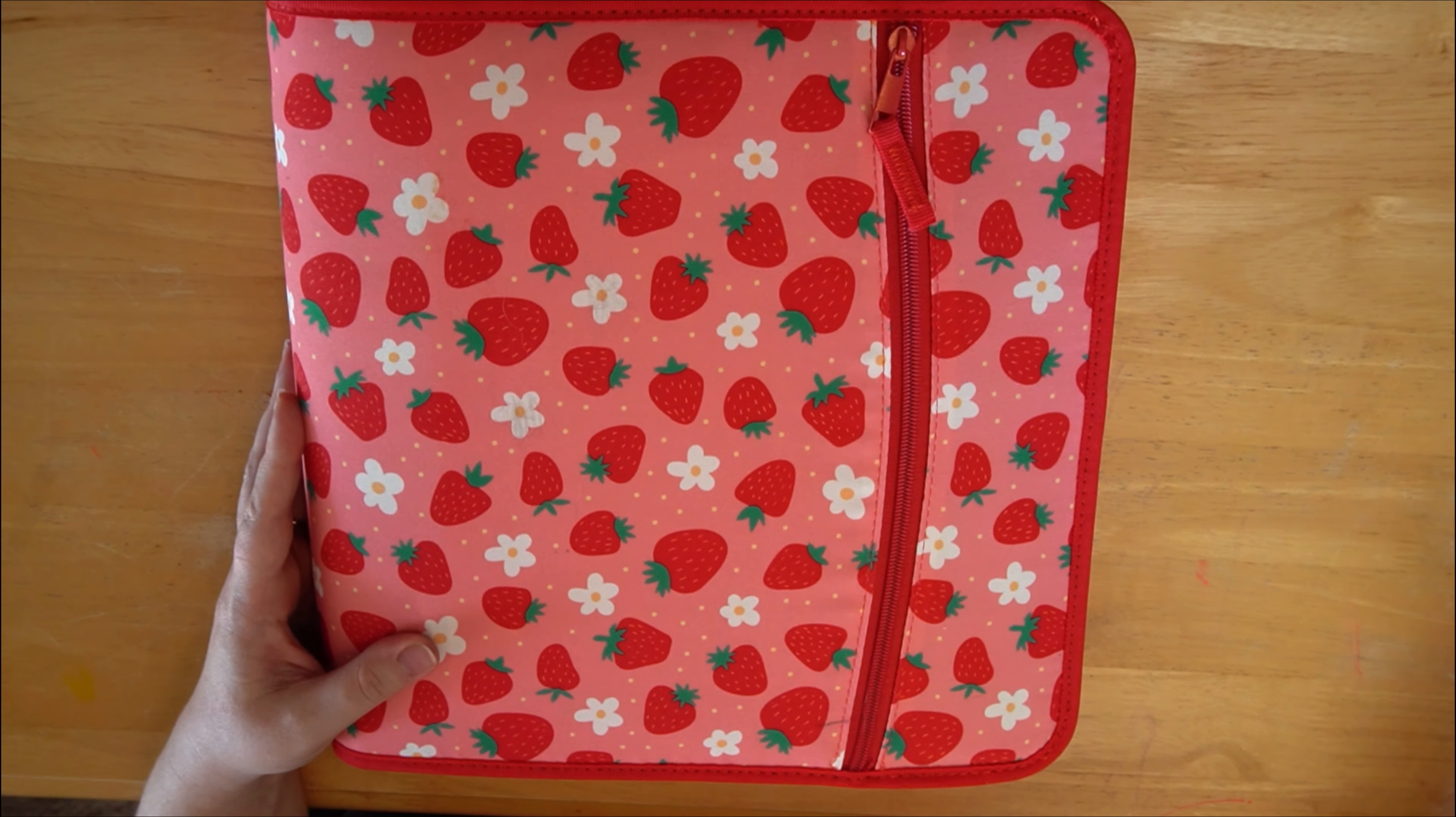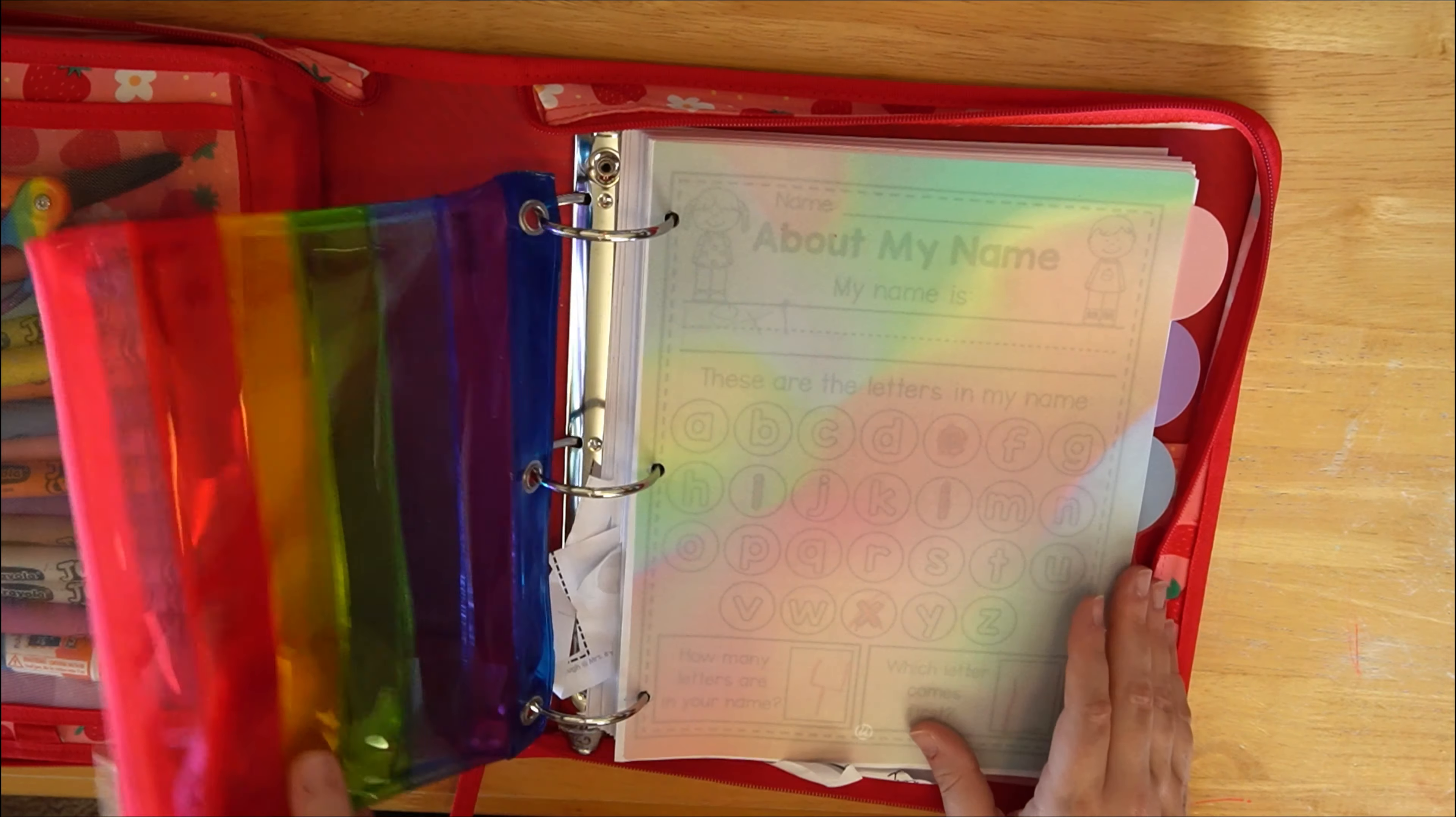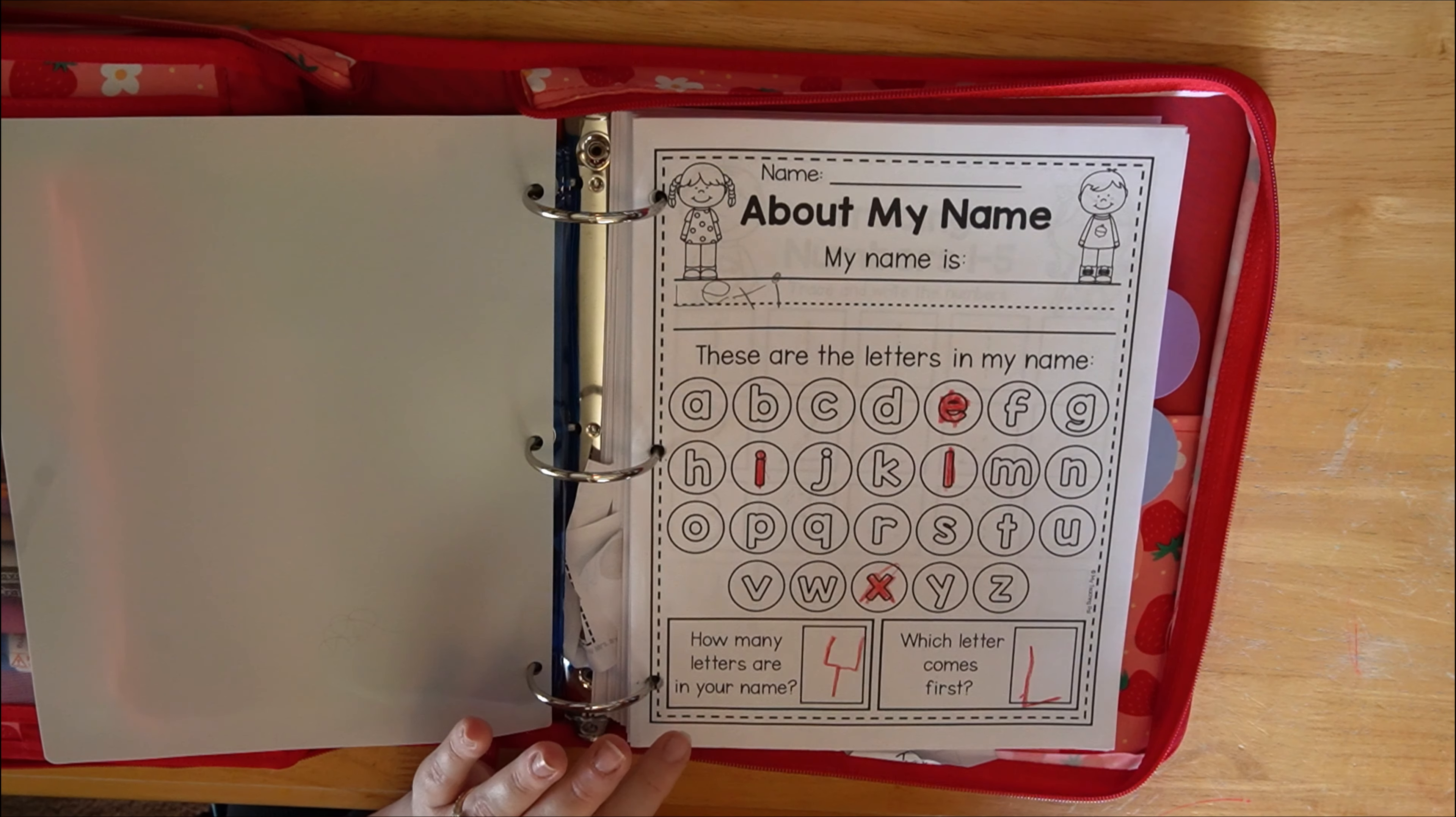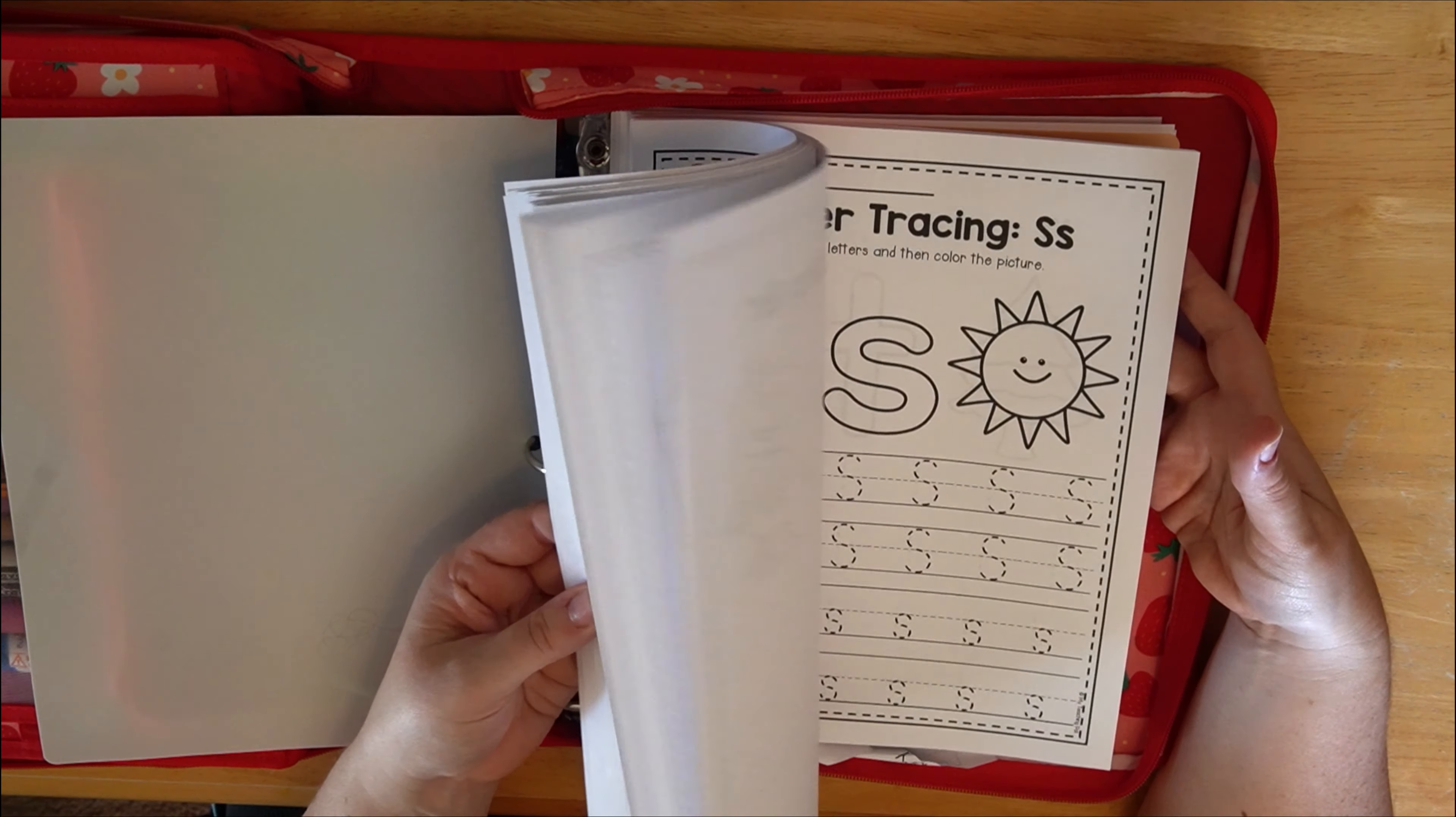So I'm just going to go in the order of which we do school. So first things first, she has a binder that's similar to her sister's. Oh good, okay, they're over here. I thought things were missing, but they're not, they're just in the wrong place. It's okay. So over here underneath this first divider, we have some of the preschool work.